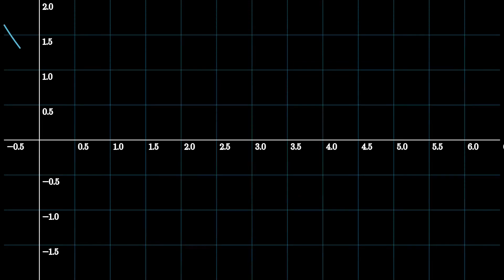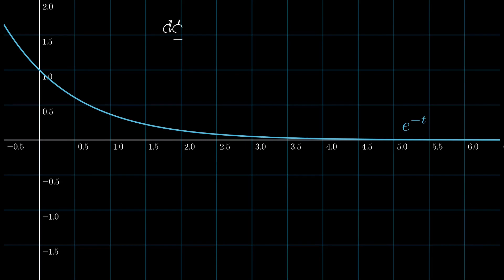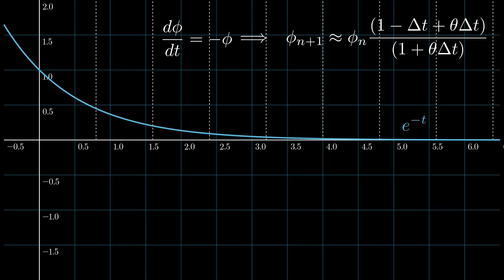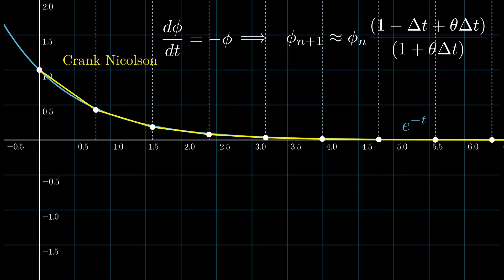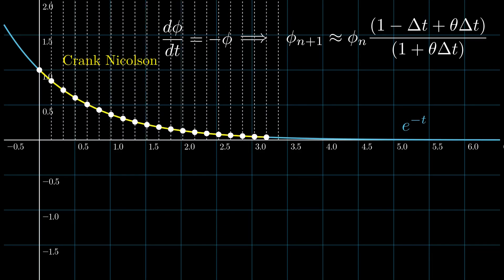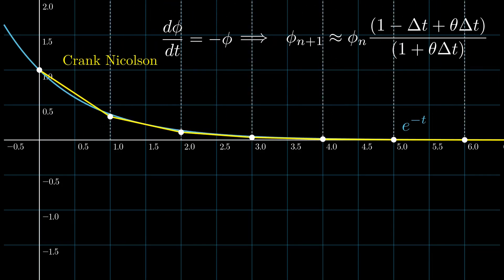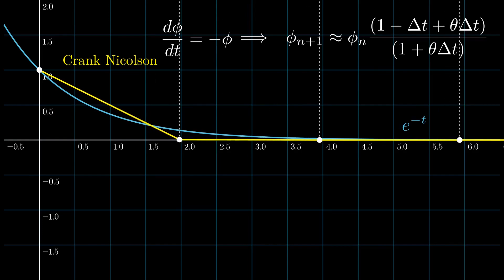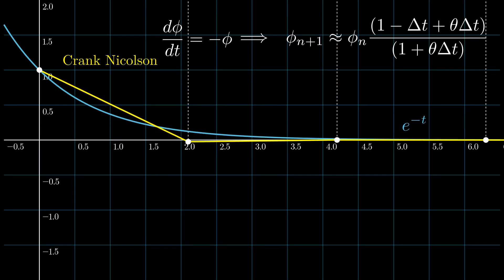Let's run it using theta of 0.5 — mixing equally between explicit and implicit. With delta t of 0.8 and initial condition phi equals 1 at t equals 0, this is much better: even at delta t of 0.8, the graph is very close to the analytical solution. At delta t of 1, still very accurate and not unstable. Continuing to increase delta t, the graph remains good up to delta t of 1.9. After delta t equals 2, the graph actually dips into the negative — it's become a bit unstable.